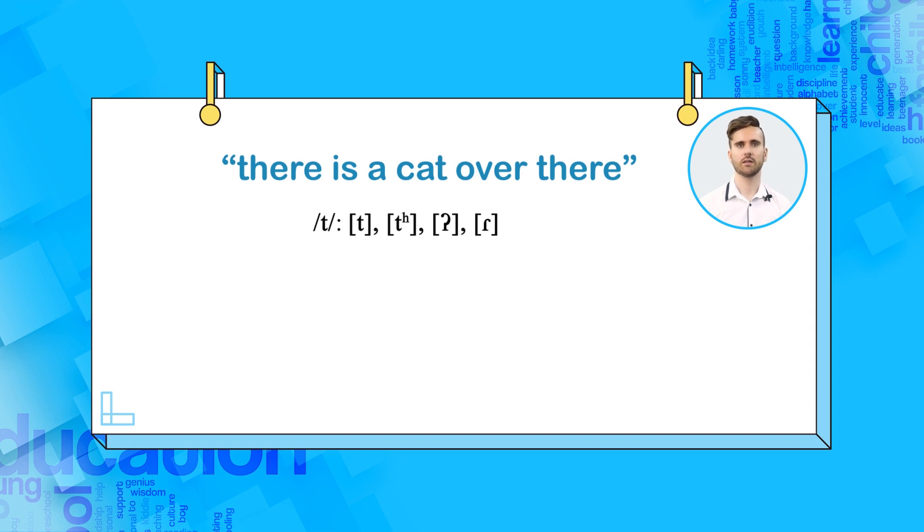In a sentence like 'there is a cat over there,' it is possible to say the phoneme t in cat with four allophones: T, t, the glottal plosive, or the symbol on the screen.